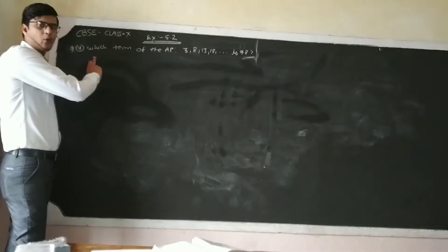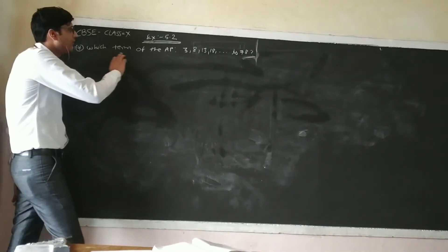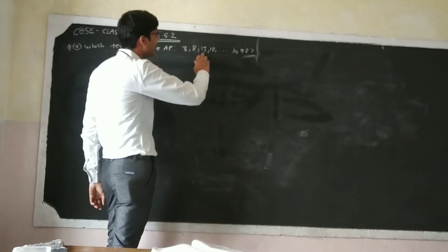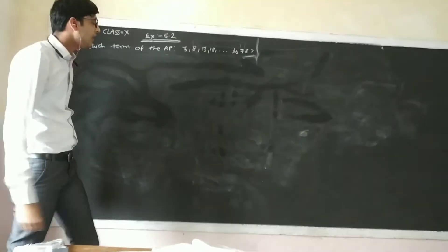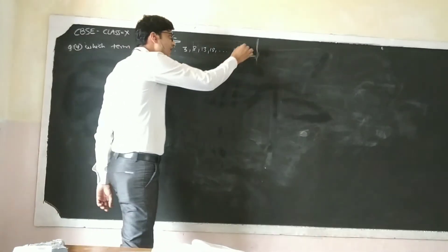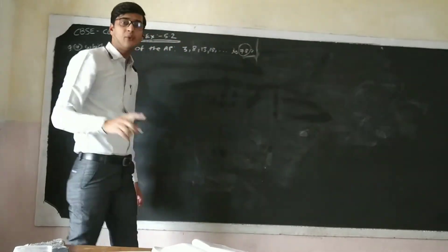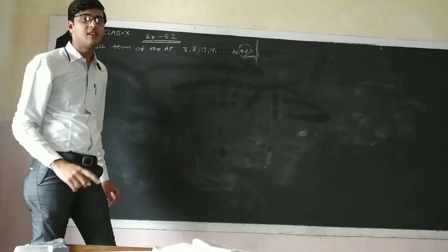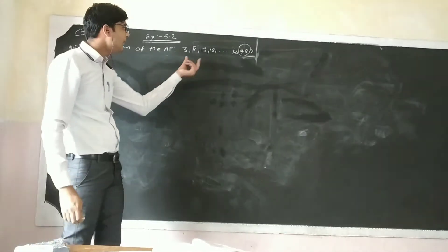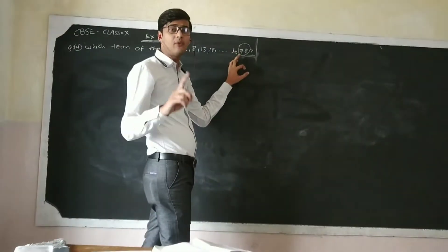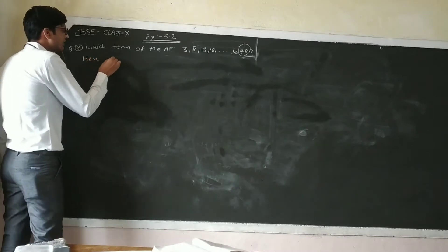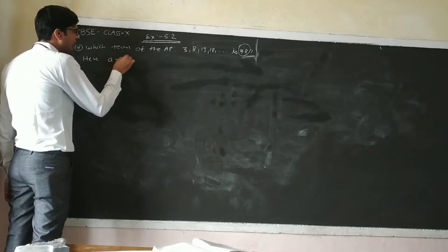Question number 4: which term of the AP is 78? So here the last term is given. A is given. Let me find which term is 78. So here first term A is 3.